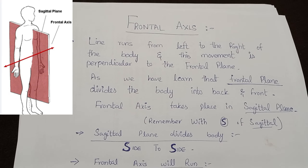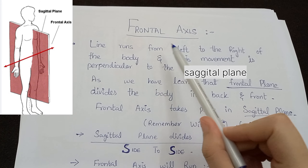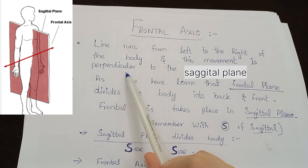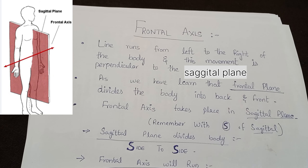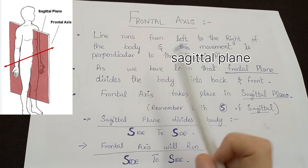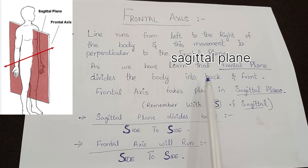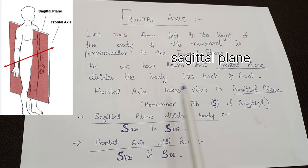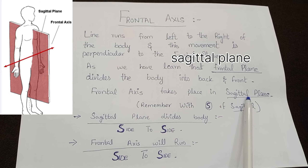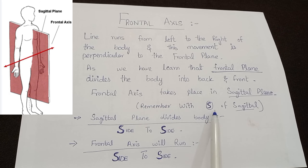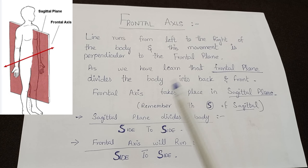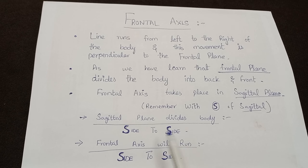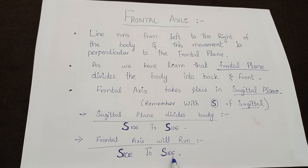Let's move towards the frontal axis. This line runs from left to right of the body, and this movement is perpendicular to the sagittal plane. The sagittal plane divides the body side to side, and the frontal axis will run from side to side — remember with S of sagittal plane.